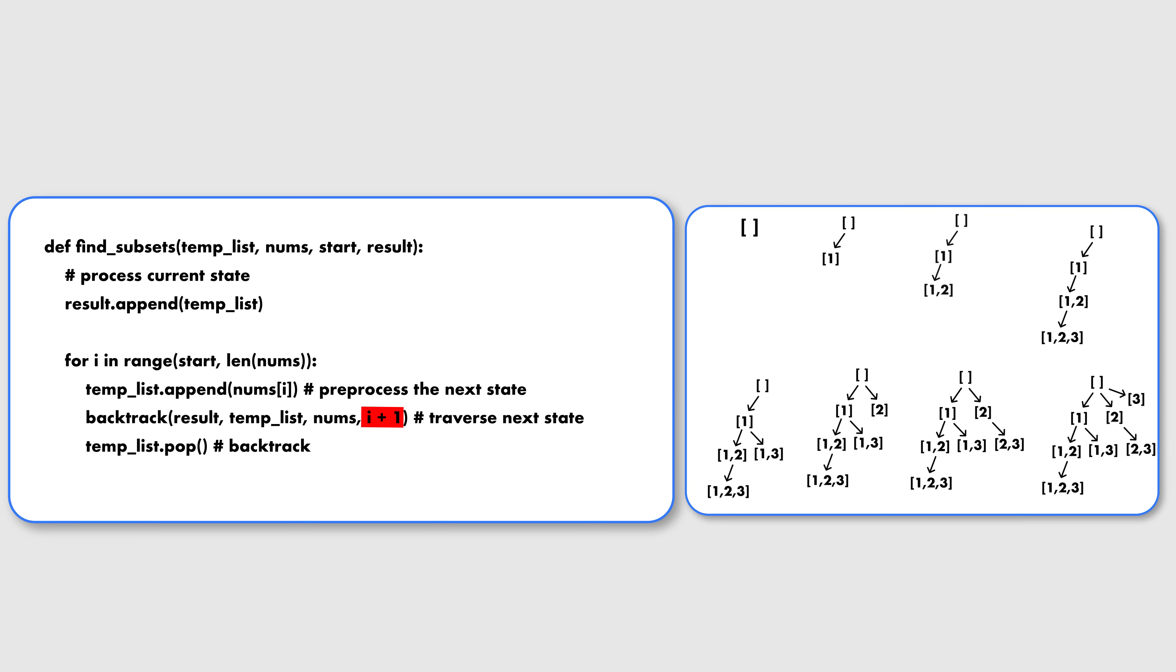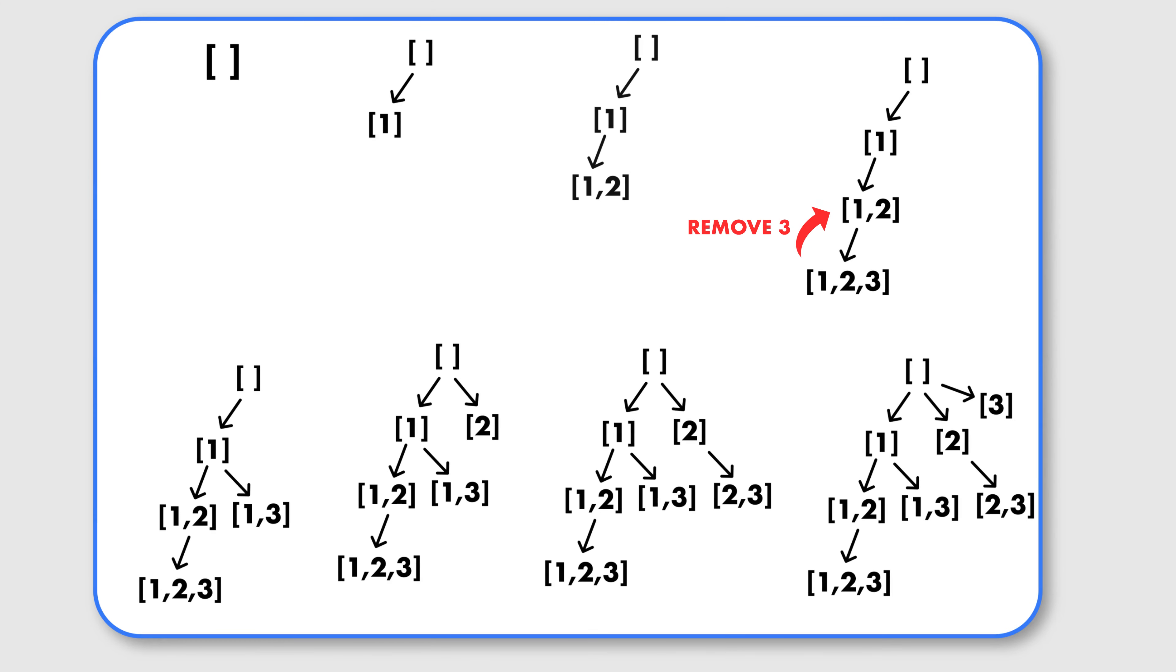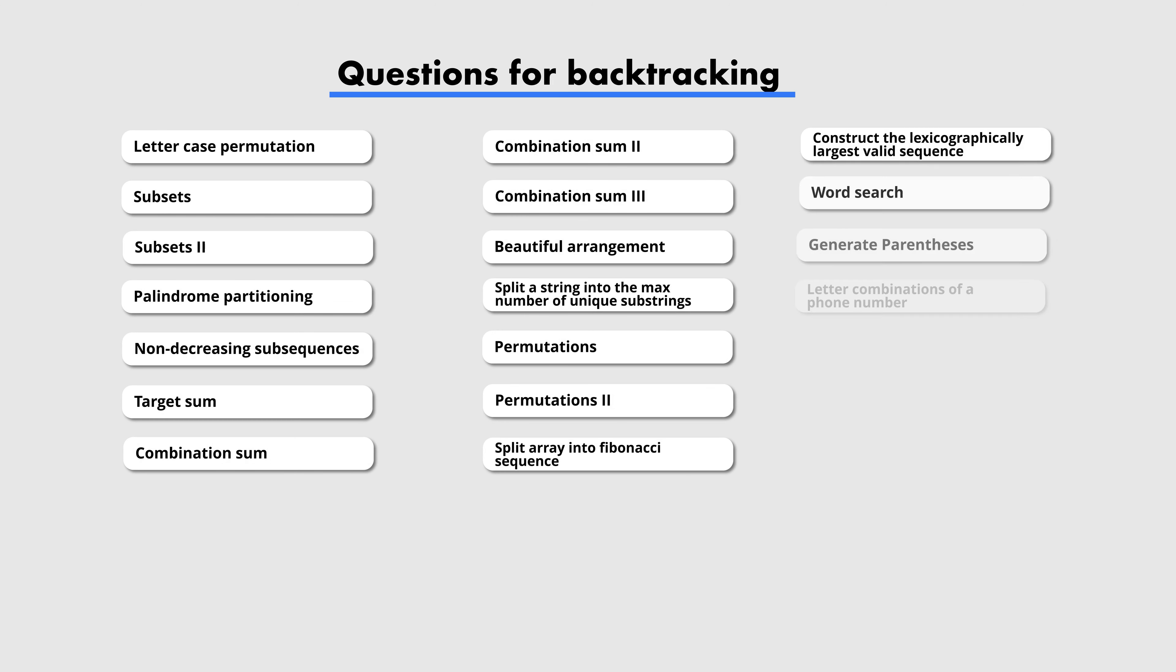When we traverse the next state, we need to reduce the decision space as always, and here we can each time increment the entry point to the array since we would already traverse all the states with the current starting point. The only thing that's left is that as we come up the tree for traversing the next states, we want to undo the last update to our state, and this is the backtracking part. This is pretty much how it's going to look like for all the backtracking questions.